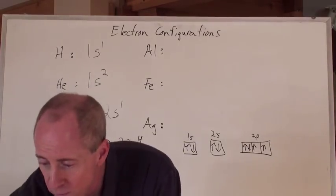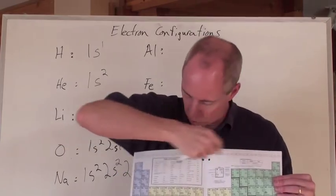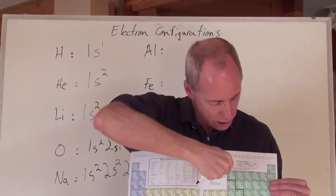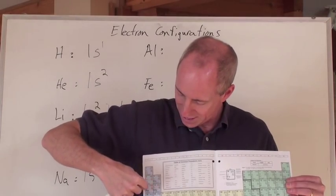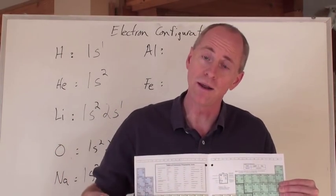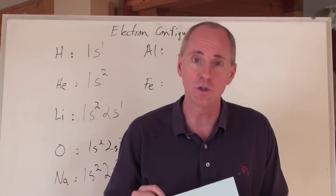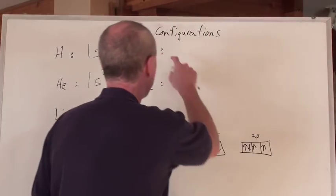Now, hey, what about aluminum? Well, aluminum, so we do aluminum on the periodic table, and we go 1s2, 2s2, 2p6, 3s2, and aluminum's right here, 3p1. So its outermost orbital is 3p1, 1s2, 2s2, 2p6, 3s1, that's what aluminum is.